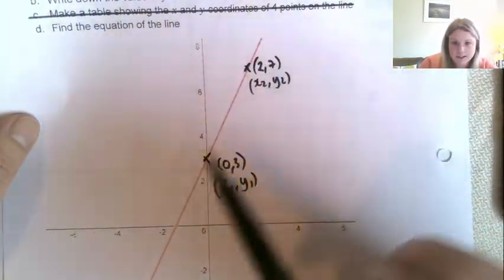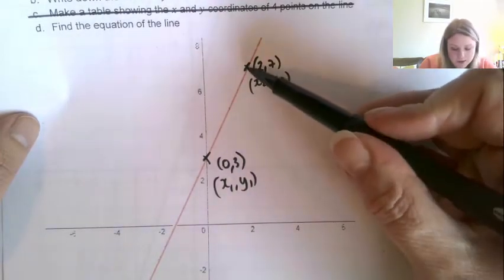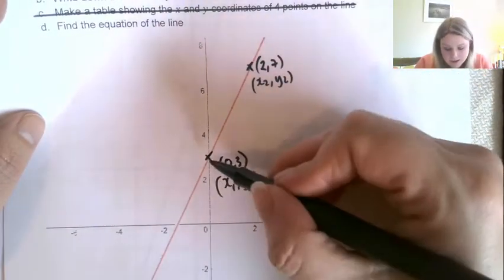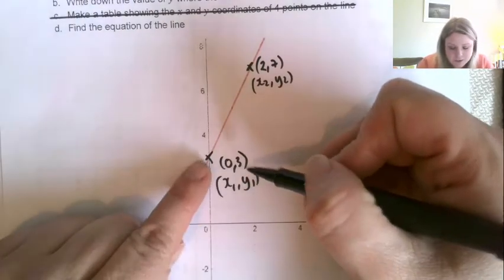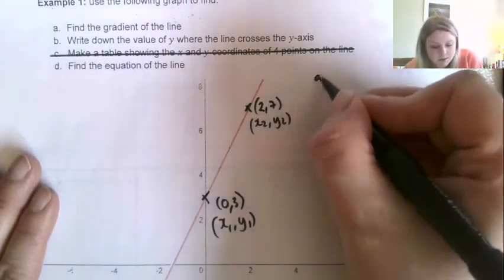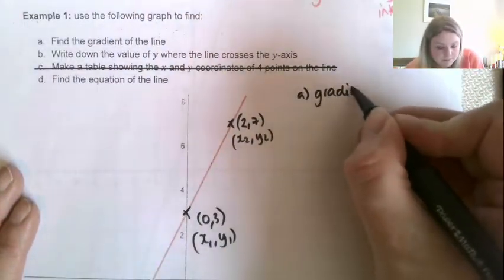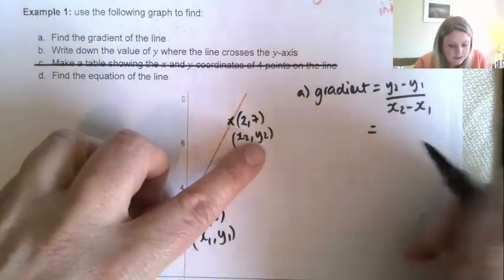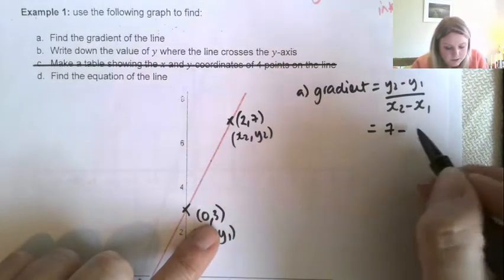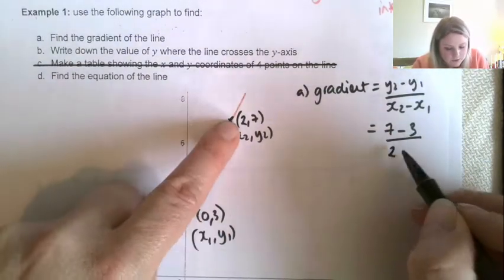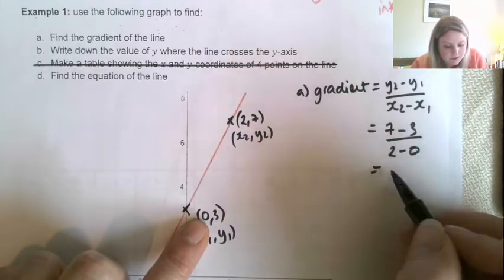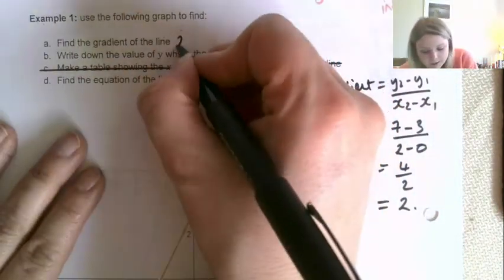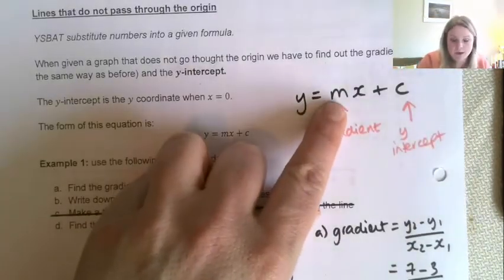And then to get the gradient, I'm going to use these two points here. So I'm pretty sure that this point here, which is 2, 7, is a point on the line, and I'm going to use that as my x2, y2. And then I'm going to use this point here because we already have it, which is 0, 3, and that's x1, y1. So to get the gradient, so this is for part A, the gradient is y2 minus y1 over x2 minus x1. So the gradient of my line is 7 take away y1, which is 3, over x2, which is 2, take away x1, which is 0. So 7 take away 3 is 4, 2 take away 0 is 2. So 4 divided by 2 gives me 2. So the gradient of my line is 2. I'm going to write that up here. So automatically I know that this little number in my equation is going to be 2.